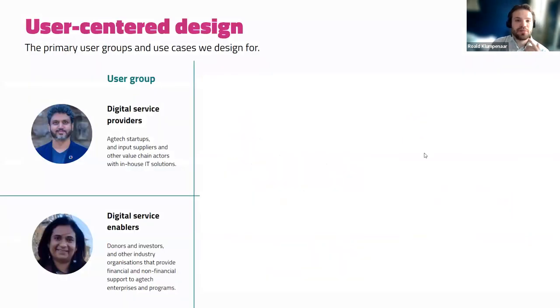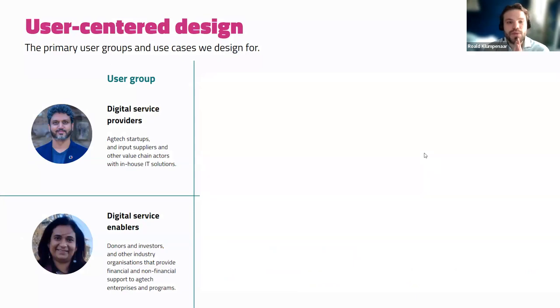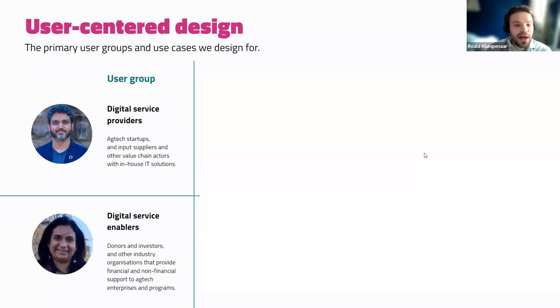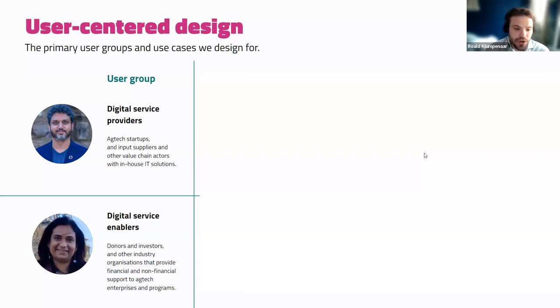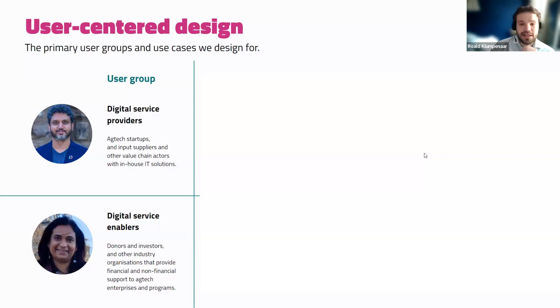The principle for us is user-centered design when we develop this tool. The two target groups are: first, digital service providers — agritech startups, but also input suppliers and other value chain actors with an in-house IT solution. And then also digital service enablers — donors, investors, and other industry organizations that provide financial and non-financial support to agritech enterprises.